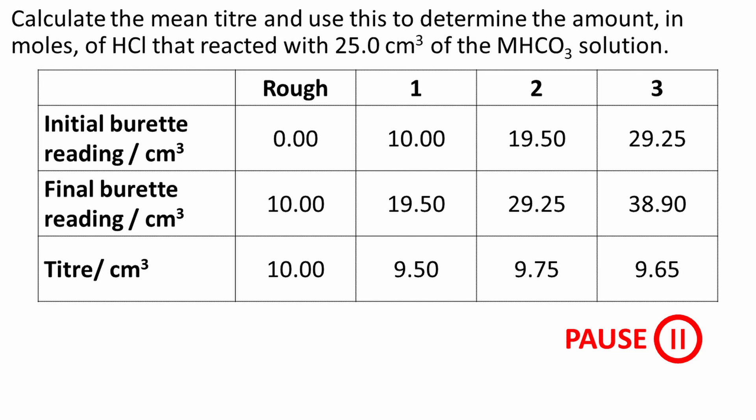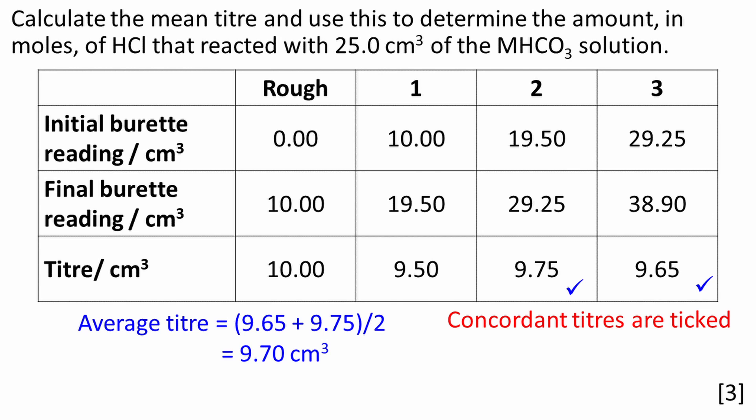Calculate the mean titer and use this to determine the amount in moles of HCl that reacted with 25.0 cm³ of the MHCO3 solution. Titers that are within 0.10 cm³ are said to be concordant. It is a good idea to tick these in the table. The mean titer is the average of the concordant titers. This works out to be 9.70 cm³. The rough titer is never used to work out the average titer.